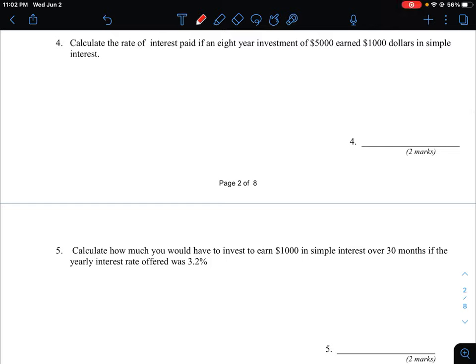Okay, so let's look at question number four. We're being asked to calculate the rate of interest paid if we take an investment for eight years, and we're investing a $5,000 amount and we're earning $1,000 in interest.